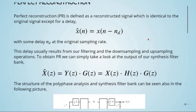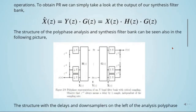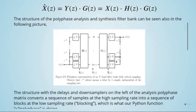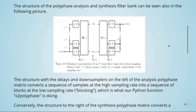To obtain perfect reconstruction, we look at the output of our synthesis filter bank. The structure of the polyphase analysis and synthesis filter bank can be seen in the following picture: our original input signal, a delay Z to the power of minus one, downsampling, a transfer function or filtering, then the output goes to the synthesis filter, upsampling with delays, and our reconstructed signal. The delays and downsamplers on the left of the analysis polyphase matrix convert a sequence of samples at high sampling rate into a sequence of blocks at the low sampling rate — called blocking — which is what our Python function x2polyphase is doing.